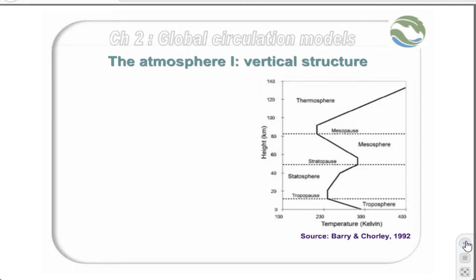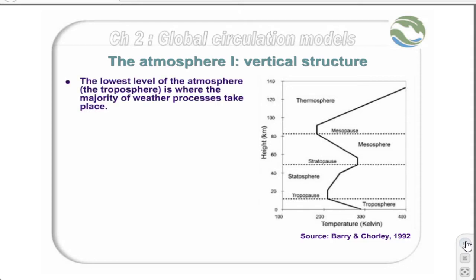We'll begin our discussion of the components of the climate with the atmosphere. The lowest level of the atmosphere, also known as the troposphere, is where the majority of weather processes take place, since it contains 75% of gases and almost all water vapour and aerosols.